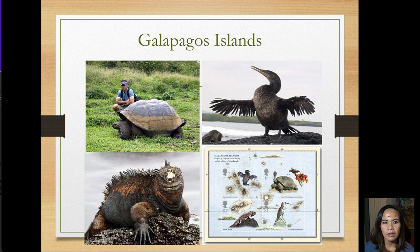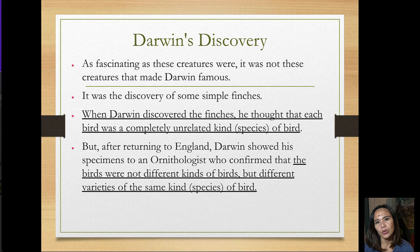On the Galapagos Islands, Darwin observed strange creatures like the giant tortoises, marine iguanas, and flightless cormorants. As you can see in this picture, this is what he found on this unique, enchanted island, as it was called back then.